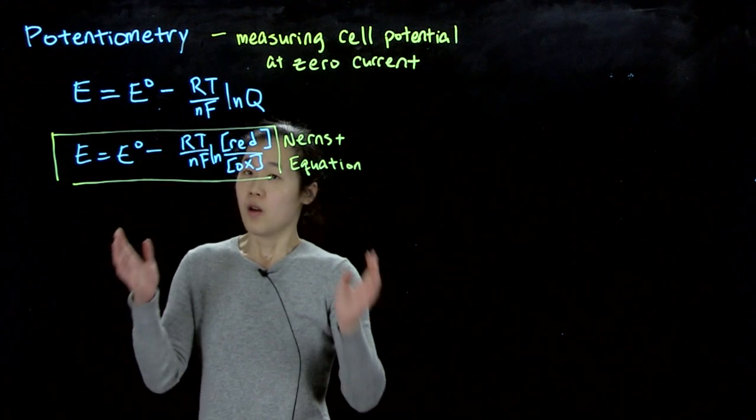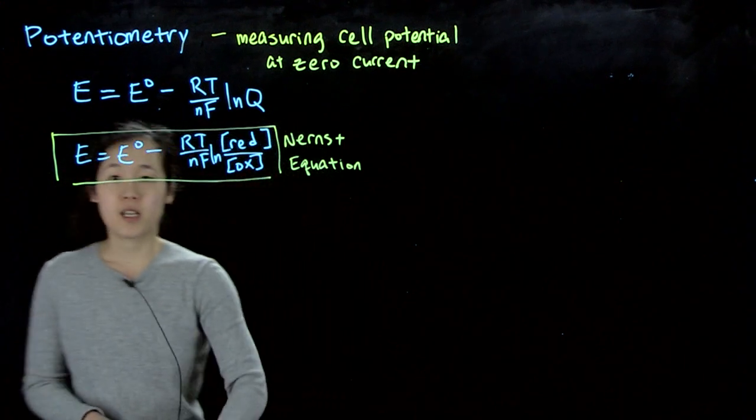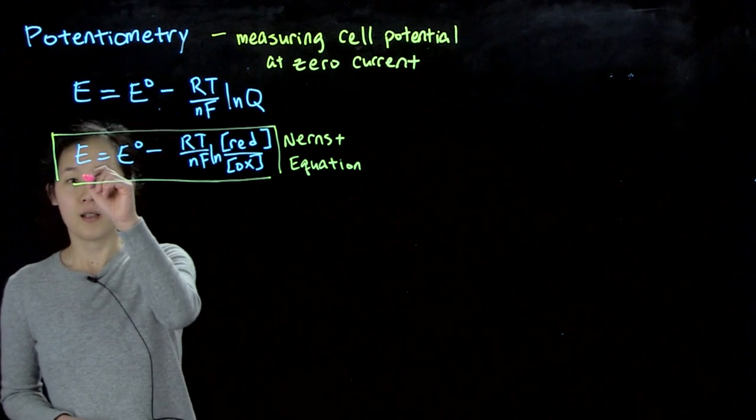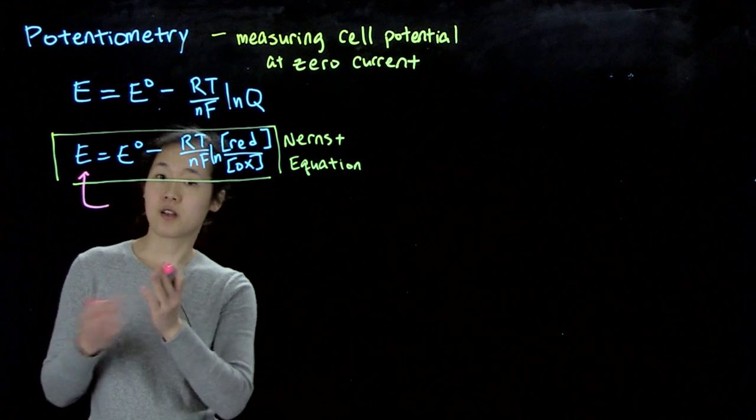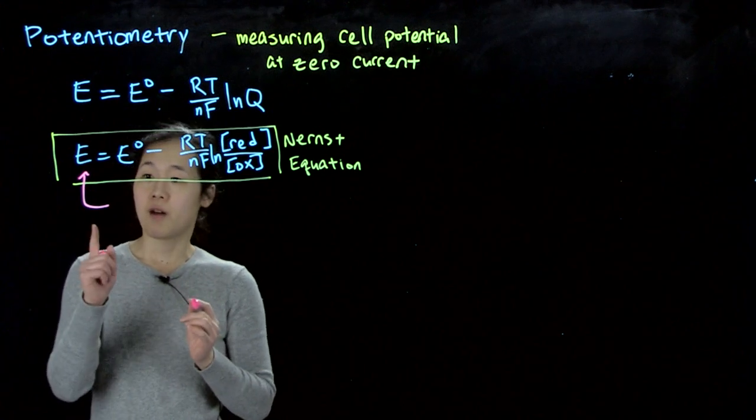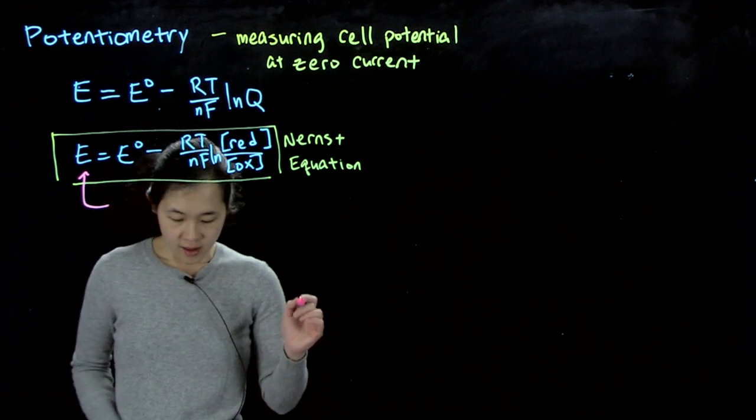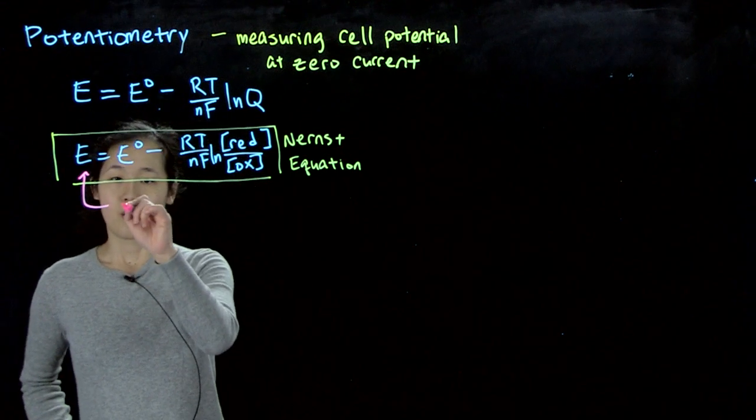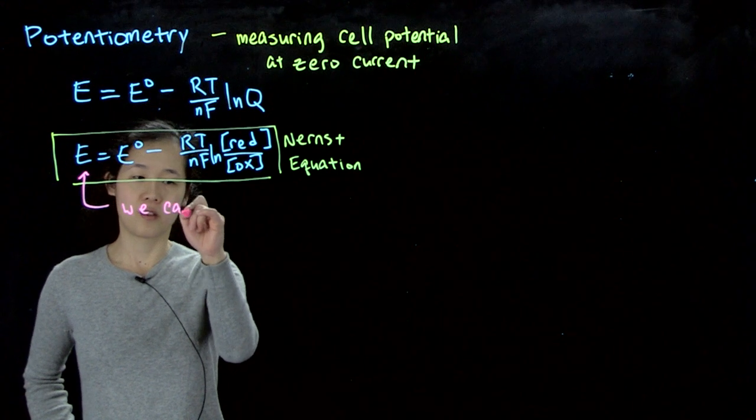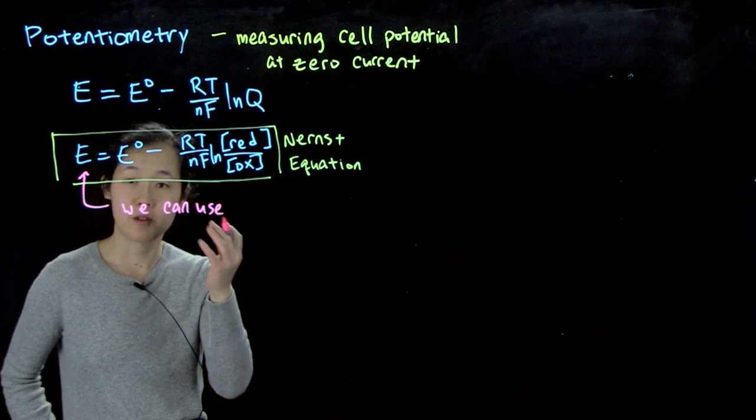And so what this means is that if we can find out our nonstandard potential, so of whatever conditions we have in our beaker, in our cell, then we can relate our cell potential to concentration. So we can use cell potential to find other chemical information.